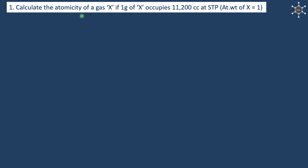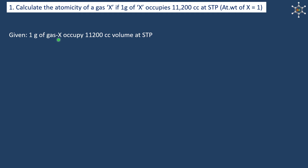Calculate the atomicity of a gas X if 1 gram of X occupies 11200 cc at STP. The atomic weight of X is given as 1 gram per mole. So we have 1 gram of gas X occupying 11200 cc volume at STP.